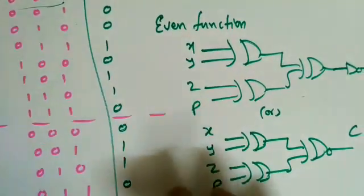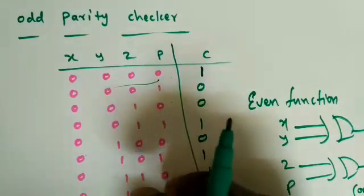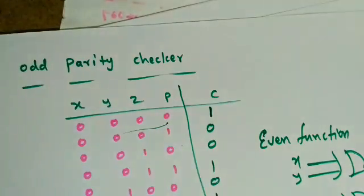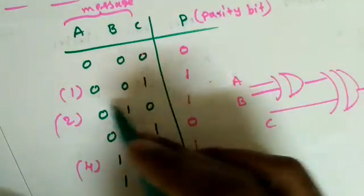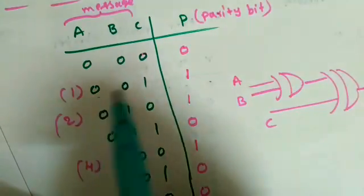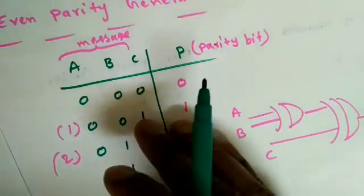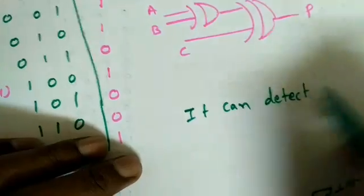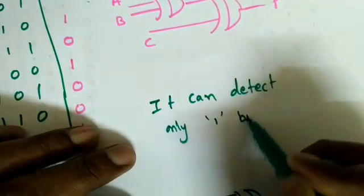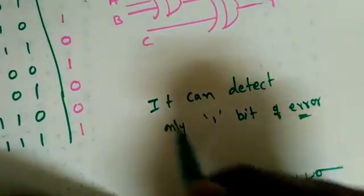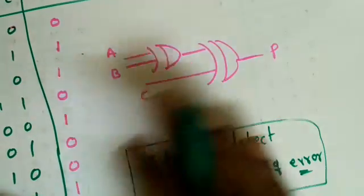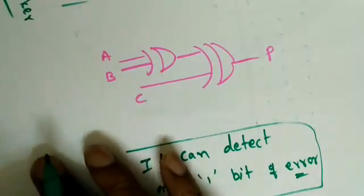One important limitation: the parity generator and checker can detect only one bit of error. If two bits simultaneously change, it will not detect that error — this is a drawback of both even and odd parity. This is about the even and odd parity generators and checkers, which are key applications of exclusive-OR and exclusive-NOR gates for error detection.